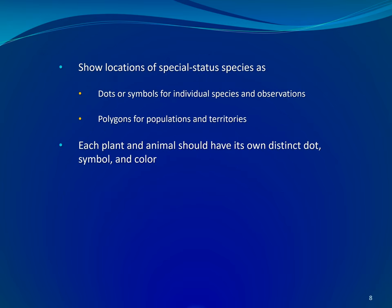Show the locations of the Special Status Species that were observed or detected during the biological field surveys. Show locations of Special Status Species as dots or symbols for individual species and observations, and polygons for populations and territories. Each plant and animal should have its own distinct dot, symbol, and color.